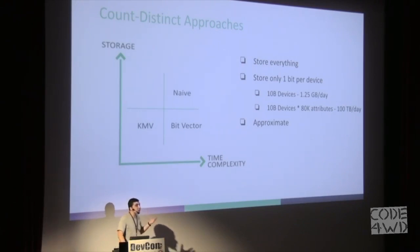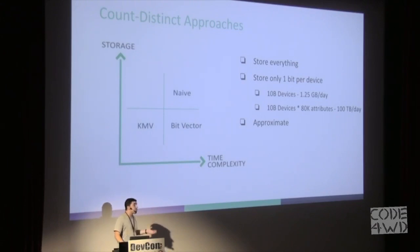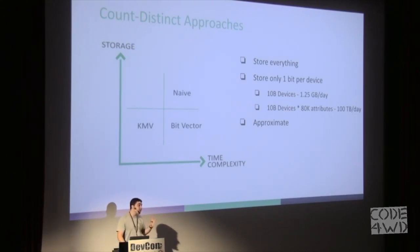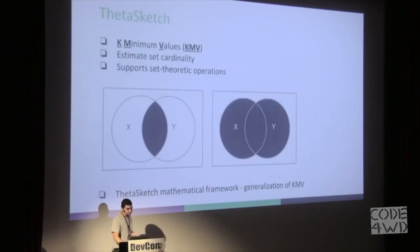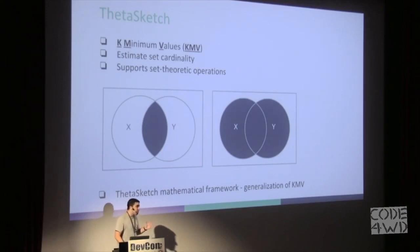This approach is pretty valid and can work, but it depends on the amount of data you have. If we are talking about only 10 billion devices per day, that's almost 1 gigabyte per day and it's not so bad. But in our case we are talking about 10 billion devices over multiple thousands of categories or attributes, and in this case we are talking about terabytes or hundreds of terabytes per day.